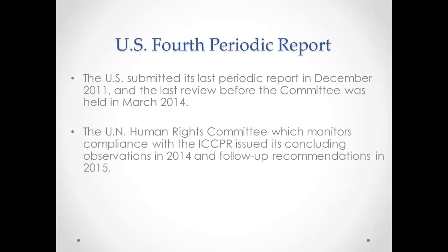The review in March 2014 involved the US sending an interagency delegation — including some state and local government representatives — to Geneva to present its periodic report. After that review, the committee issued concluding observations: recommendations and findings highlighting where the US was doing well, where progress had been made, and areas of concern needing more action. In 2015, a one-year follow-up gave the US a very low grade over its implementation in five highlighted areas.